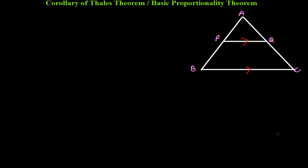In the previous video we discussed the Thales Theorem, also known as the Basic Proportionality Theorem — what it is, how to prove it, and a little elaboration. In this video I'm going to elaborate a bit more, sometimes called the corollary of Thales Theorem. But first, let me remind you what the Basic Proportionality Theorem states.